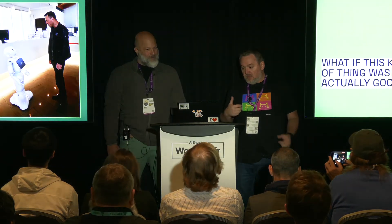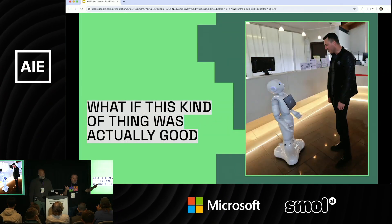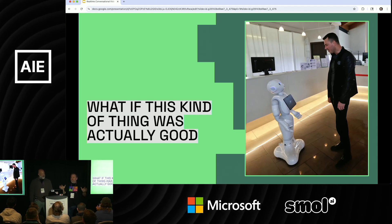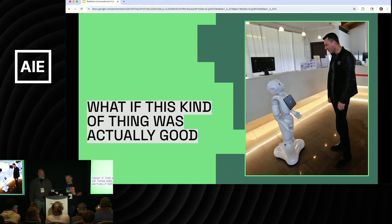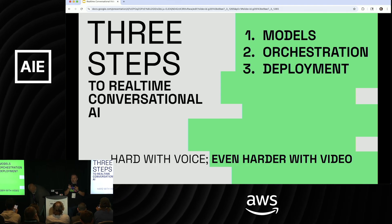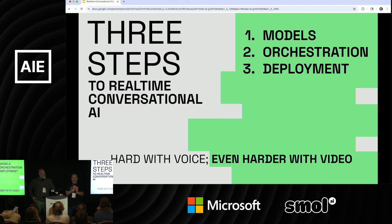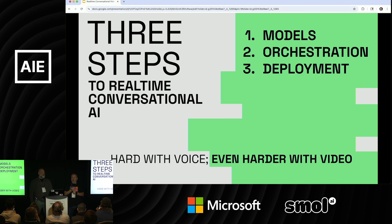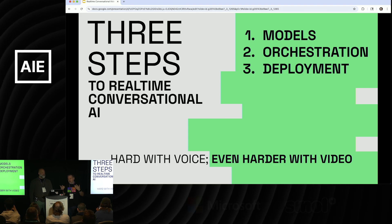We're here to talk about real-time conversational video with Pipecat — that's me — and with Tavis, that's Brian. In the interest of keeping it moving, let's talk about what we're here for. Have any of you ever seen one of those robot concierge things? They don't work — they're terrible. It's actually possible nowadays to build this kind of thing but actually good. There are three things you need to think about when building real-time AI: first, your models; second, your orchestration layer; and third, deployment.